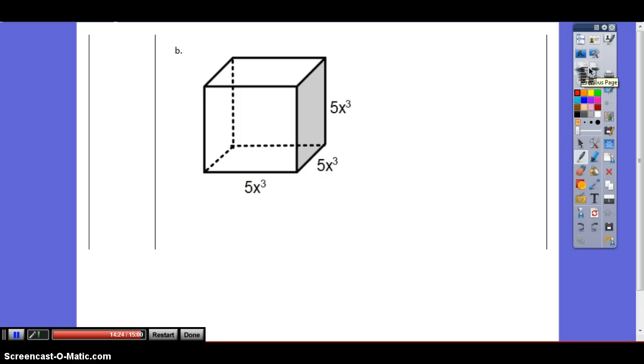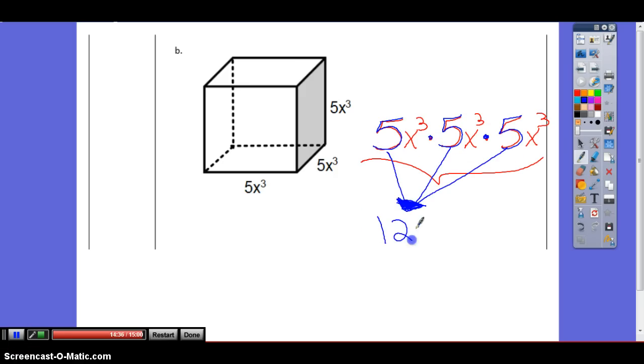Last one. Get the right answer for this one and you can start your homework which is pages 2 and 3 in your packet. 5 times 5 times 5 was 125. And then how many x's? I have 3 plus 3 plus 3 which is 9. So 125x to the 9th power. You may start your homework.